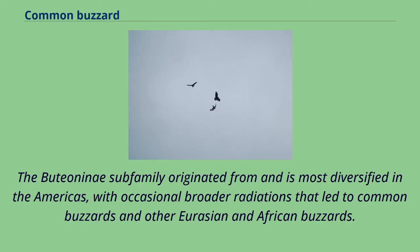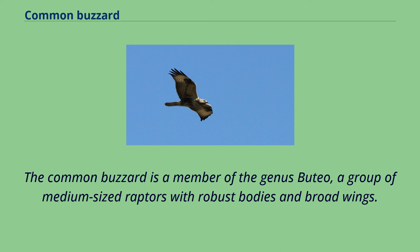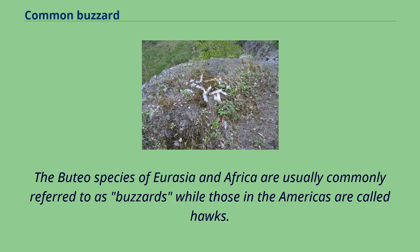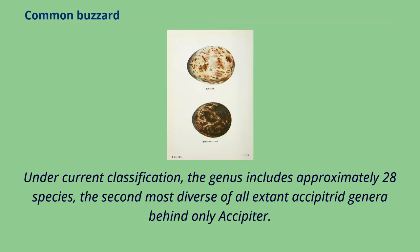The Buteonini subfamily originated from and is most diversified in the Americas, with occasional broader radiations that led to common buzzards and other Eurasian and African buzzards. The common buzzard is a member of the genus Buteo, a group of medium-sized raptors with robust bodies and broad wings. The Buteo species of Eurasia and Africa are usually referred to as buzzards while those in the Americas are called hawks. Under current classification, the genus includes approximately 28 species, the second most diverse of all extant accipitrine genera behind only Accipiter.